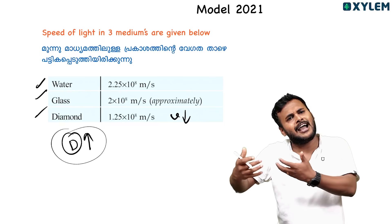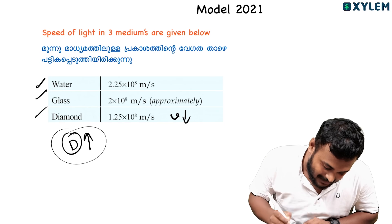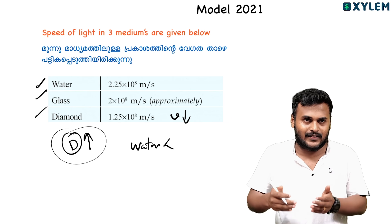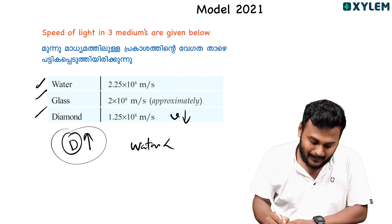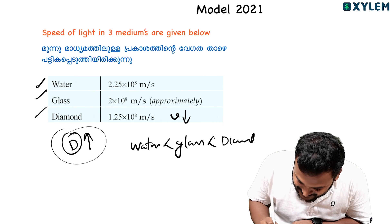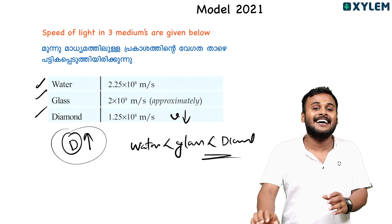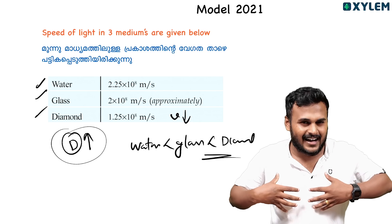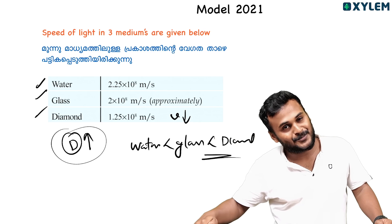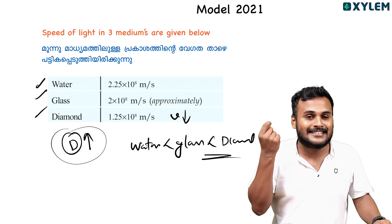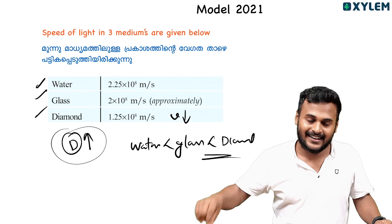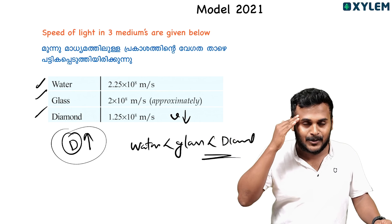First is water, then glass, then diamond. Diamond has the highest optical density — the speed of light is lowest in diamond. So in increasing order of optical density: water, glass, diamond. That is the arrangement.